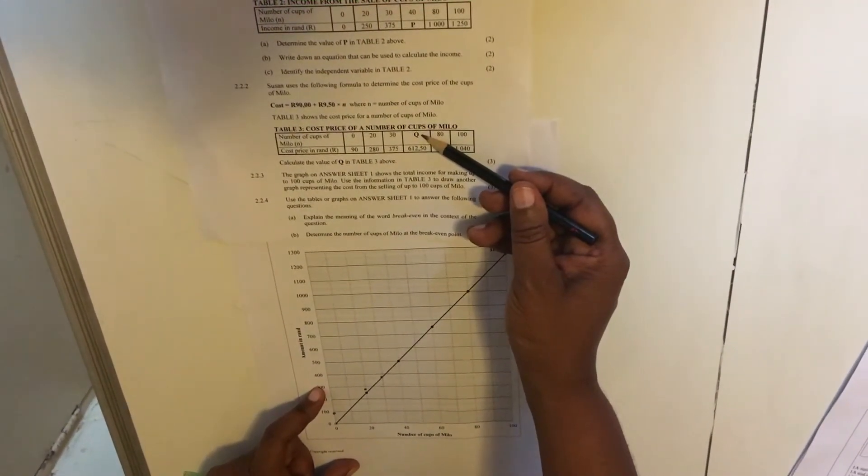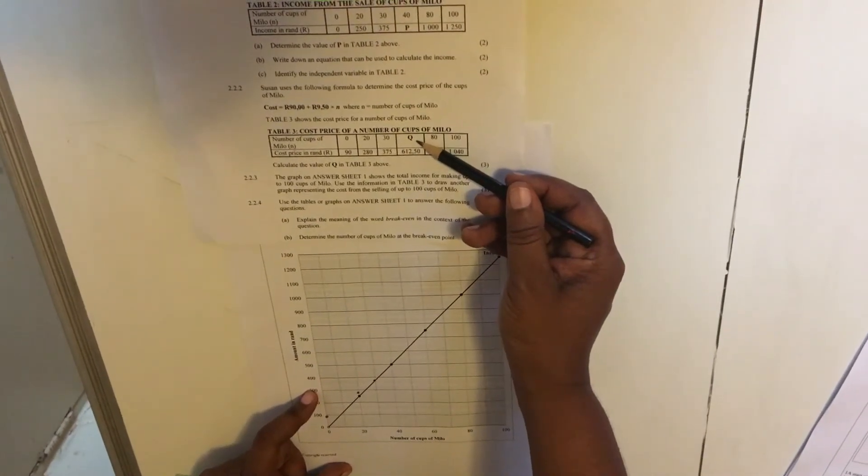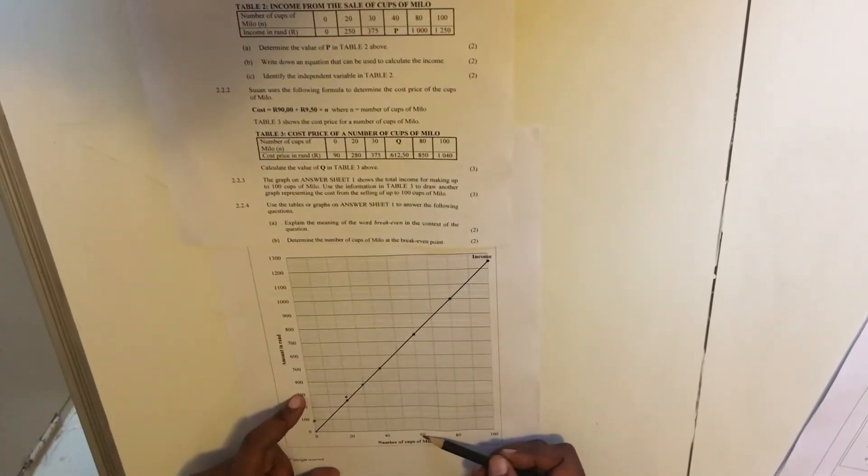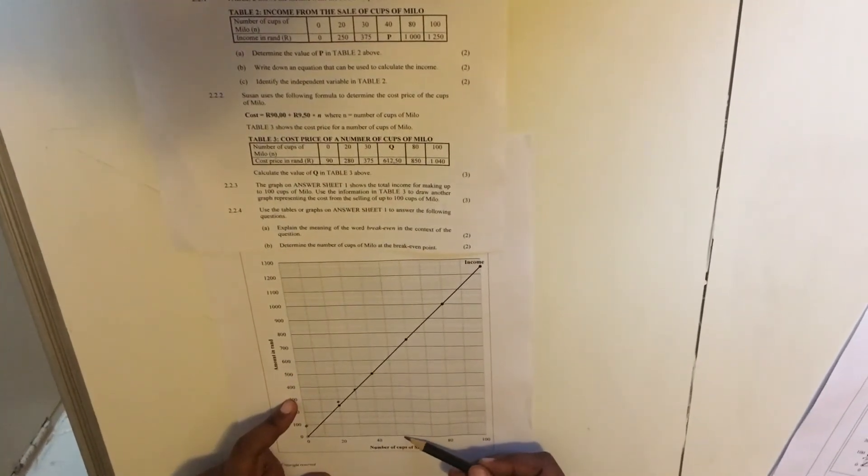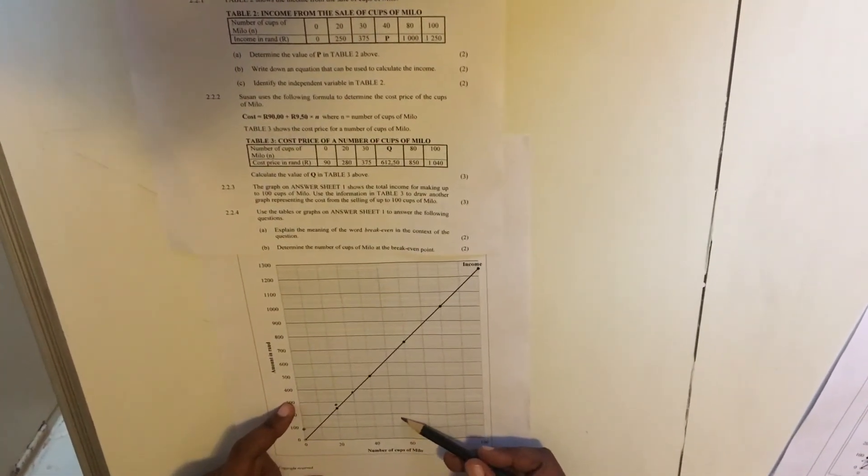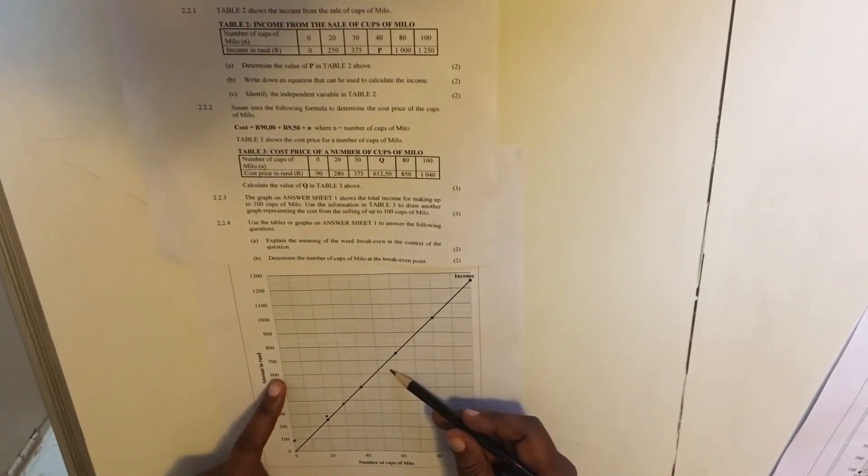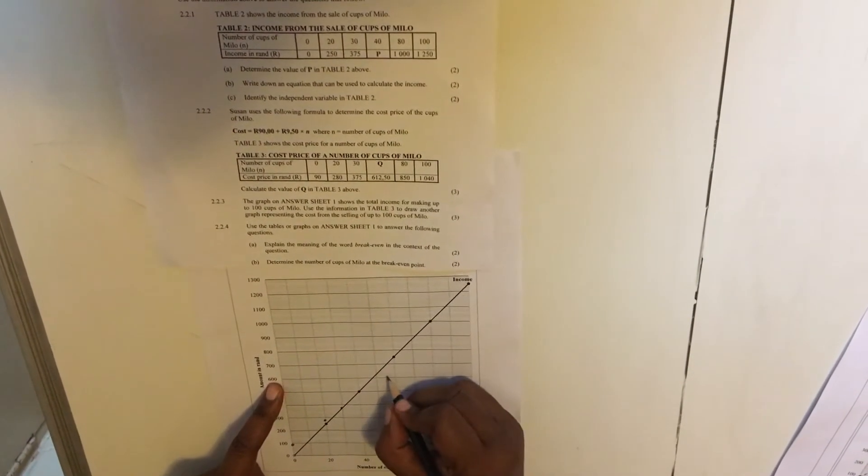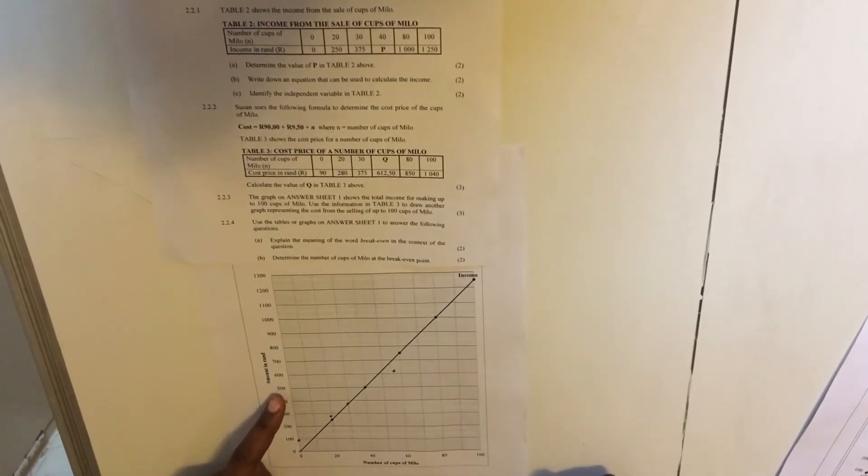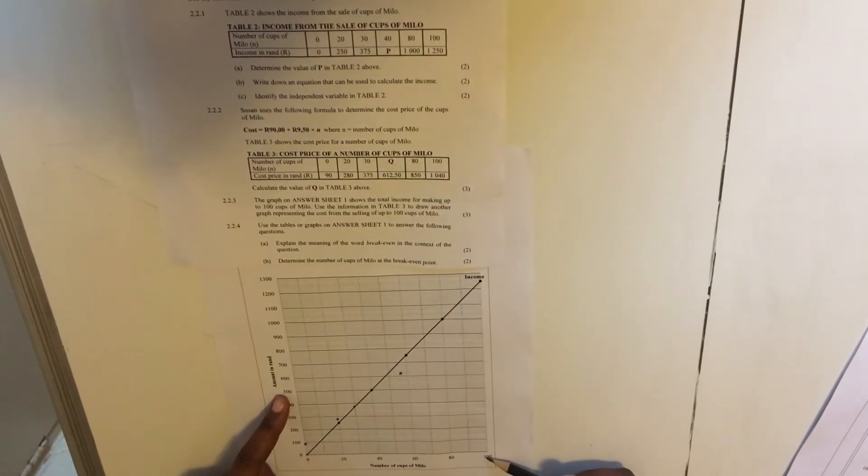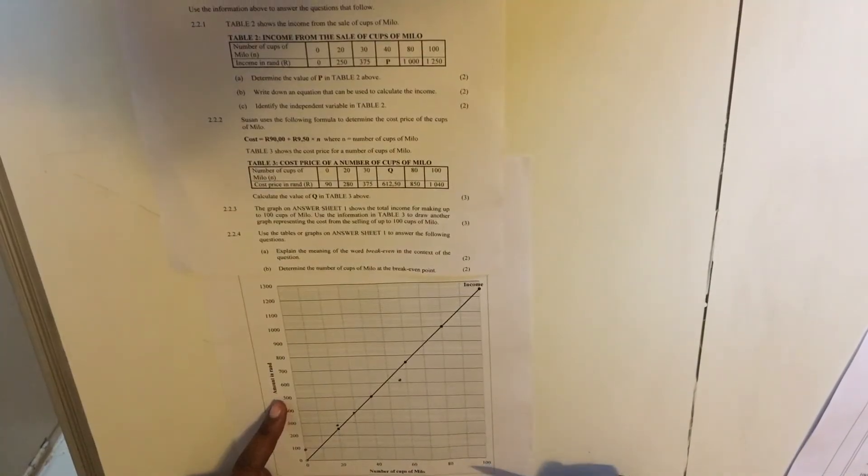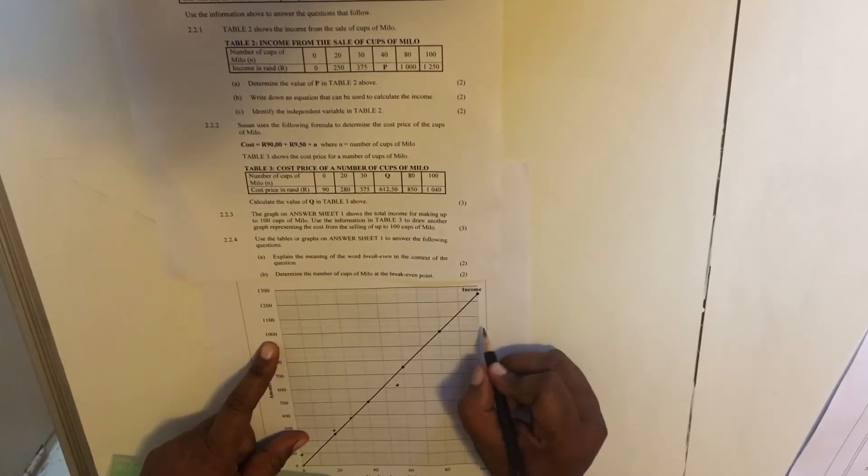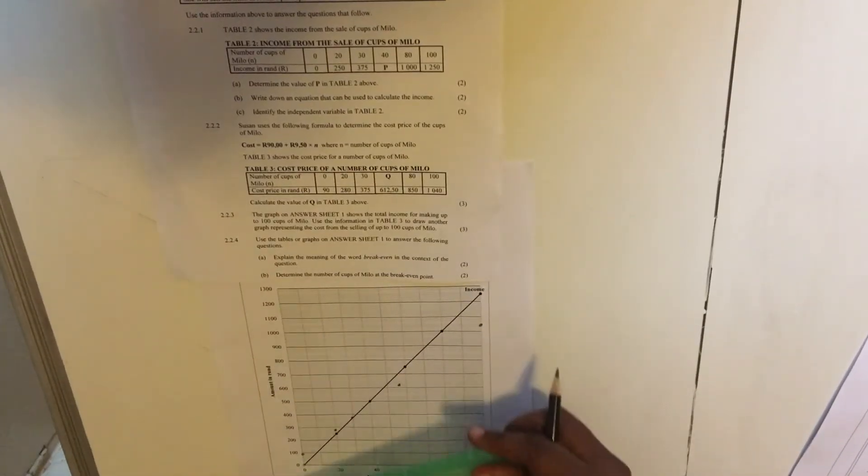The next one, you remember the calculated Q was 55. 55, R612.50. Okay. 55. This is 60. This is 50. 55 will be somewhere here. And then 600 is 600. R612. 612. 610. 12. It's somewhere here. Then the last one, when they are 100, it's R1,040. 1,010, 20, 30, 40. R1,040.